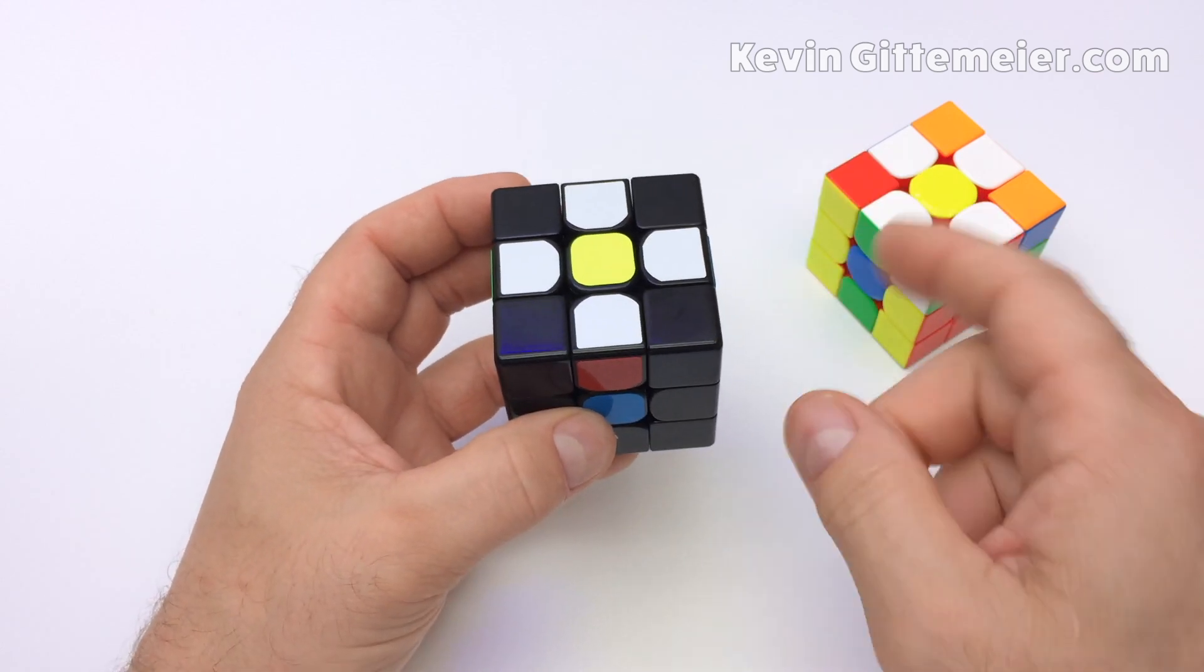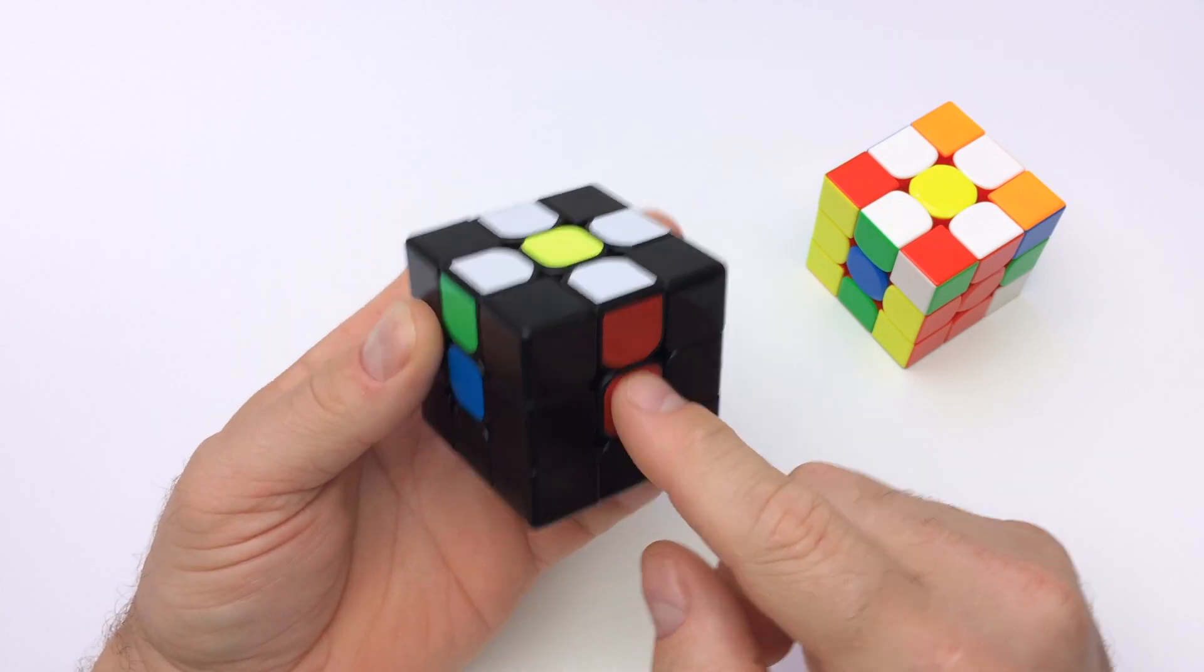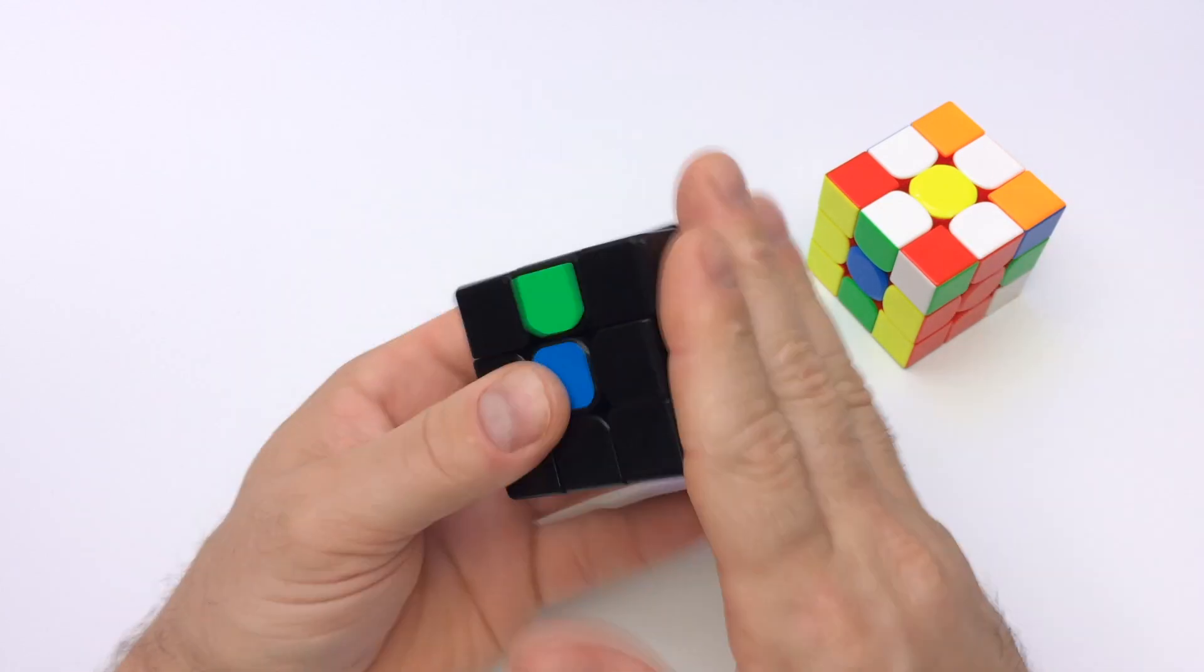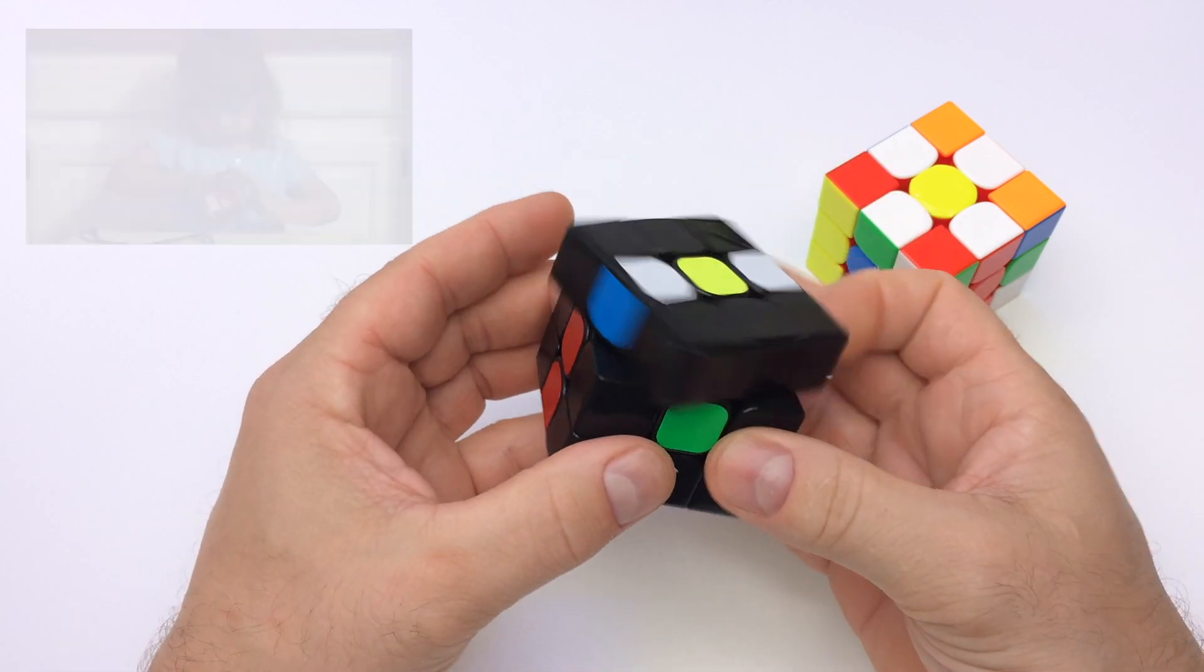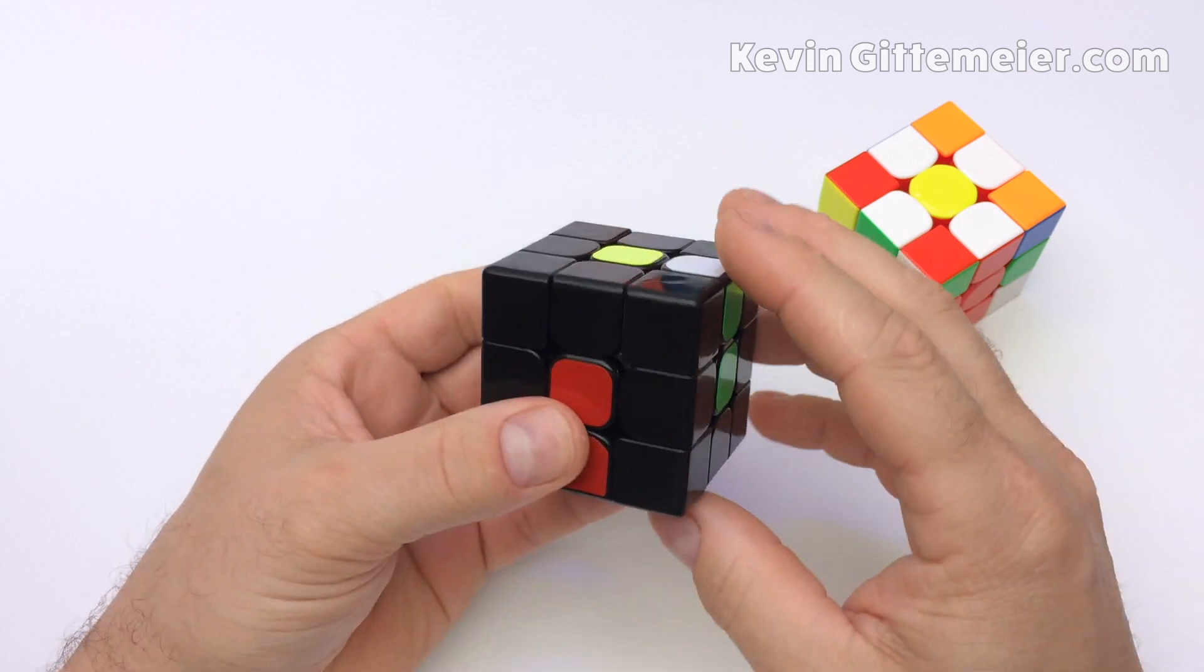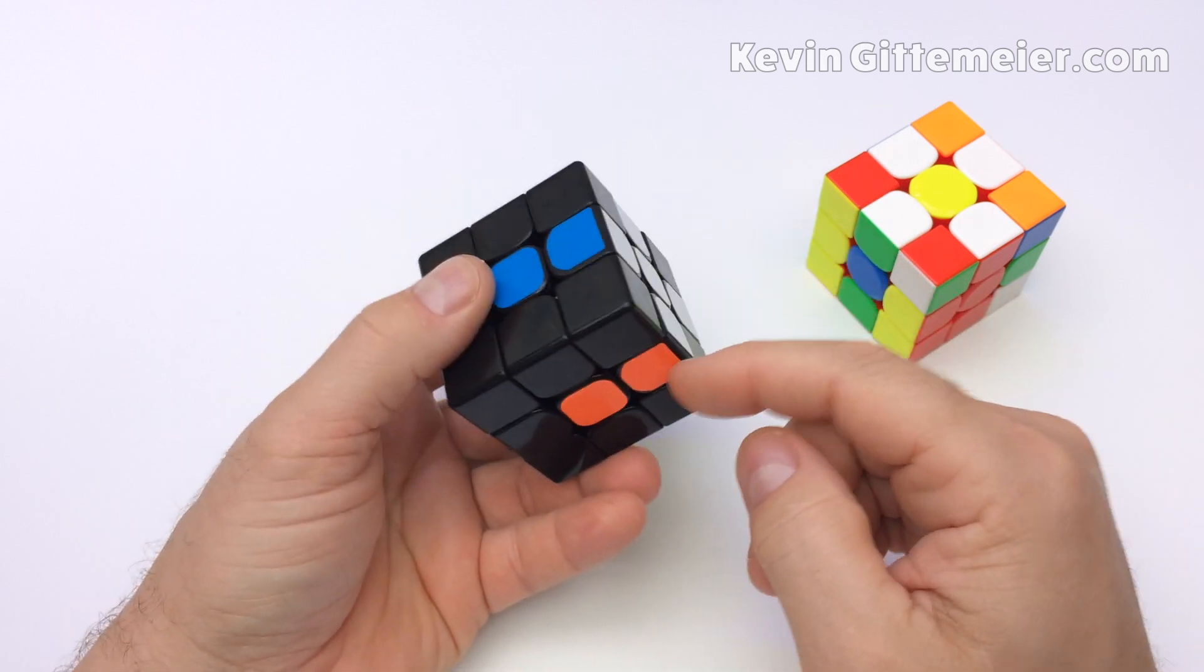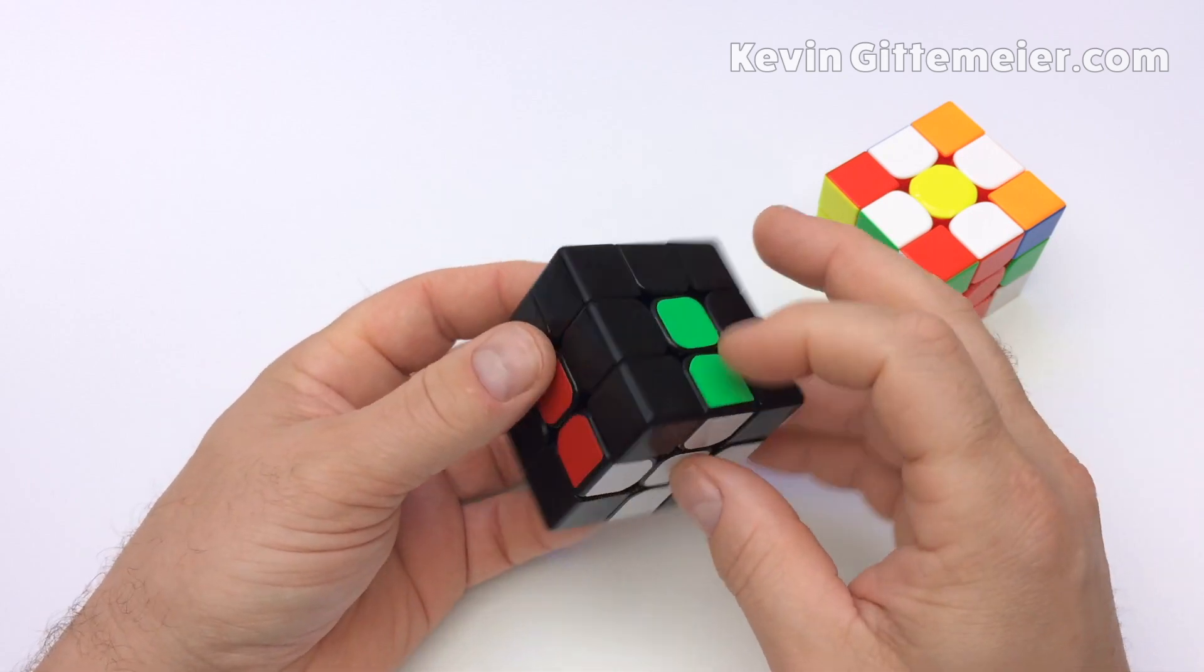Now we turn the up layer to orient the edges one at a time so the adjacent color matches its center. Then we spin it down with an R2 slap aside. And we have a solved white cross. All the edges are correct with their respective center colors.